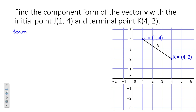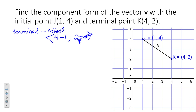Terminal minus initial: X terminal minus X initial gives 4 − 1 = 3 in the positive x direction, and Y terminal minus Y initial gives 2 − 4 = −2 in the y direction. So the component form is ⟨3, −2⟩. If we translated this vector to the origin, we'd go 3 in the positive x direction and 2 in the negative y direction — same magnitude and direction.